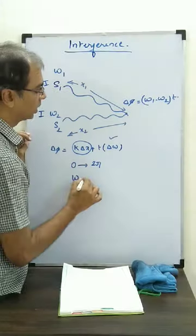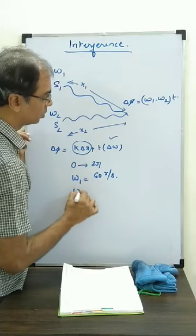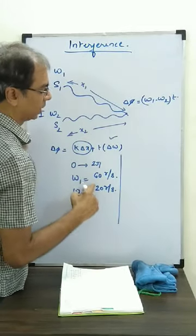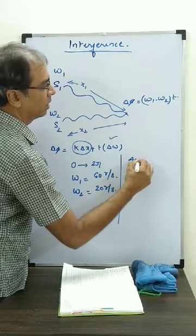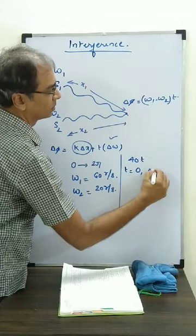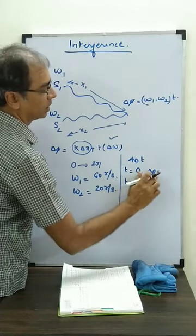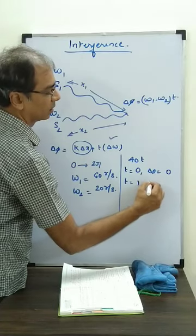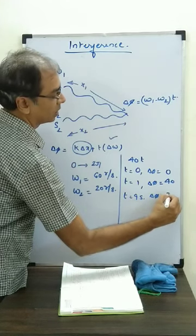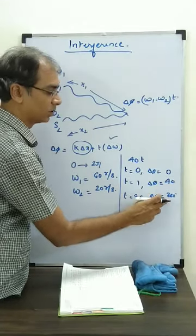If suppose I say omega 1 is 60 radians per second and omega 2 is 20 radians per second, then omega 1 minus omega 2 is 40, so it is 40 into T. If T equal to 0, then delta phi is 0. If T is 1 second, then delta phi is 40. And if T equal to 9 seconds, then delta phi is going to become 360. So it is changing — it is becoming 0 also, it is becoming 360 also, and in between it is going to become 180 degrees also at some point of time.